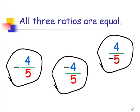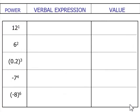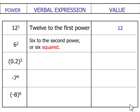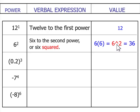Let's make sure we can read these verbal expressions and know the value of each. The first is read as 12 to the first power, which is 12. The second is read as 6 squared — you can say 6 to the second power, but we prefer 6 squared. When typing, we can use the caret key to indicate a power. The value is 36.